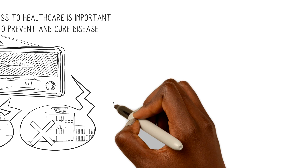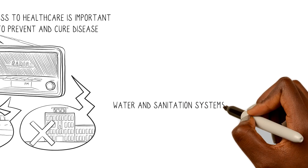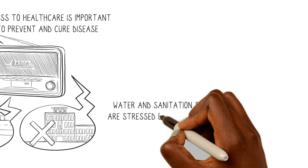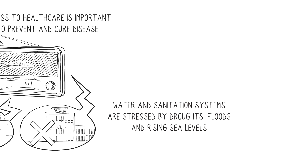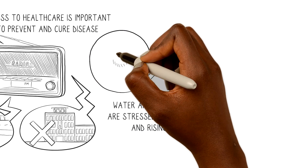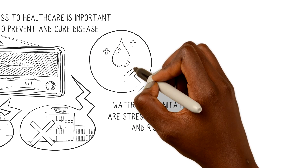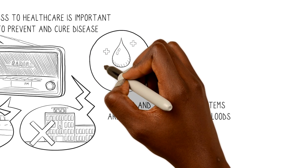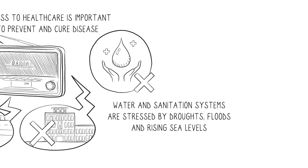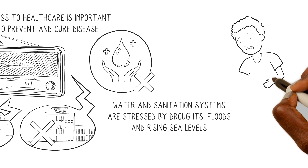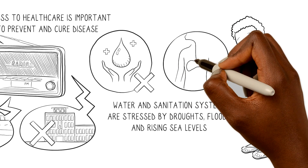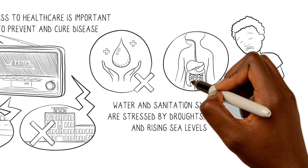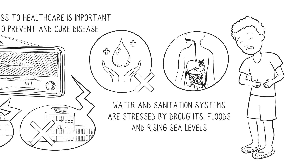Water and sanitation systems are stressed by droughts, floods, and rising sea levels. This affects the availability of clean water for irrigation and human consumption — such as washing, drinking, and cooking. This could make people sick and cause diarrhea in children, which reduces the body's capacity to absorb nutrients from food.